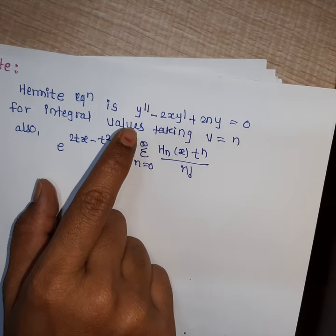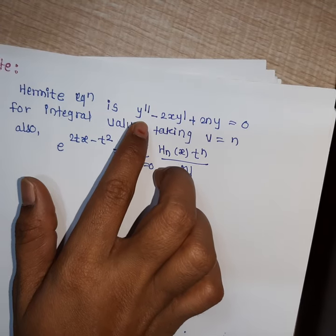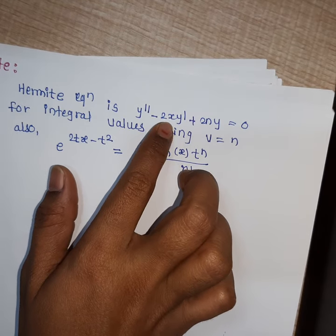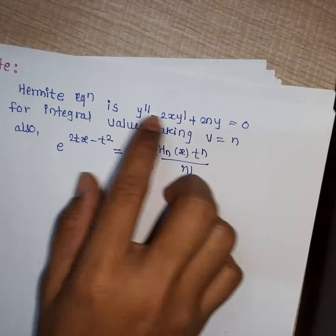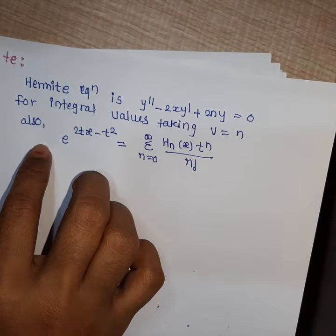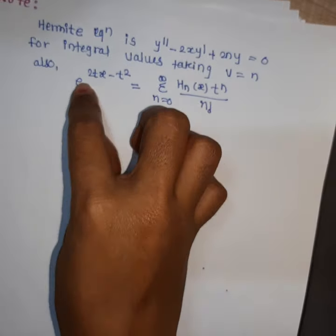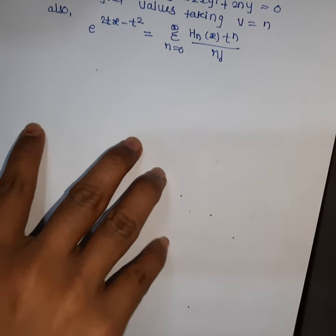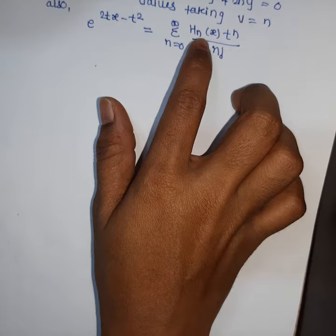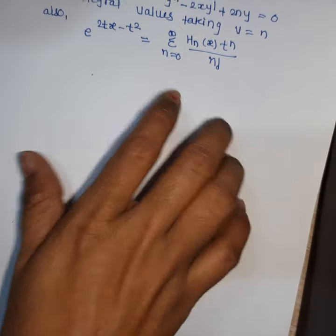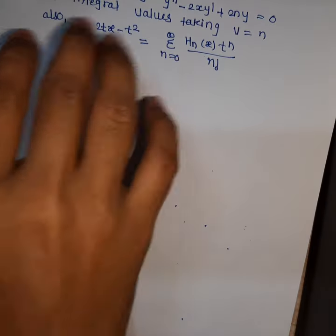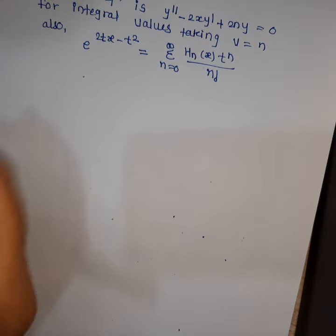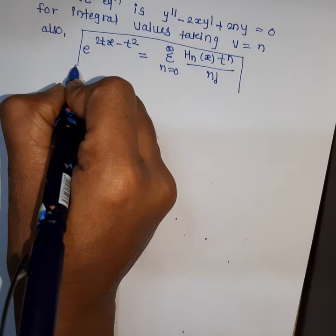Note that the Hermite equation is y″ − 2xy′ + 2ny = 0, valid for integral values of n. The generating function is e^(2tx − t²) = summation from n=0 to infinity of Hₙ(x) tⁿ / n!. From this generating function you can derive all four recurrence relations directly.